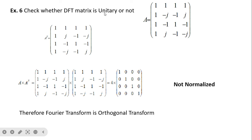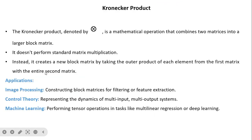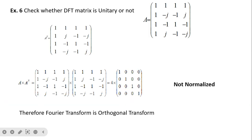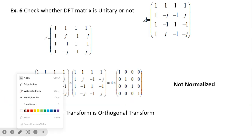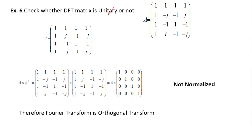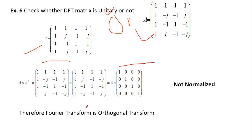Checking whether the DFT matrix is orthogonal: we take the transpose of the DFT matrix and multiply. The result is again the identity matrix. Therefore, the Fourier transform is also an orthogonal transform.